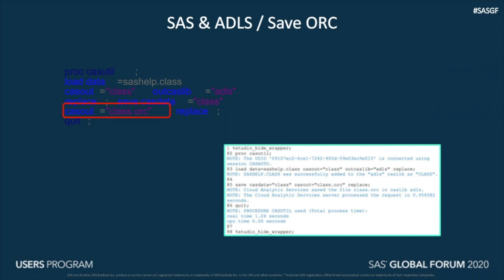Key information here is the highlighted CAS OUT parameter — the file name should have .ORC to save the file in that format. As we look at the log, the SAS ORC engine saves the CAS table to ADLS in ORC format. Another point to note: the SAS ORC engine is independent of the ADLS support, meaning you can also create an ORC file output persisted just to a local path as well.